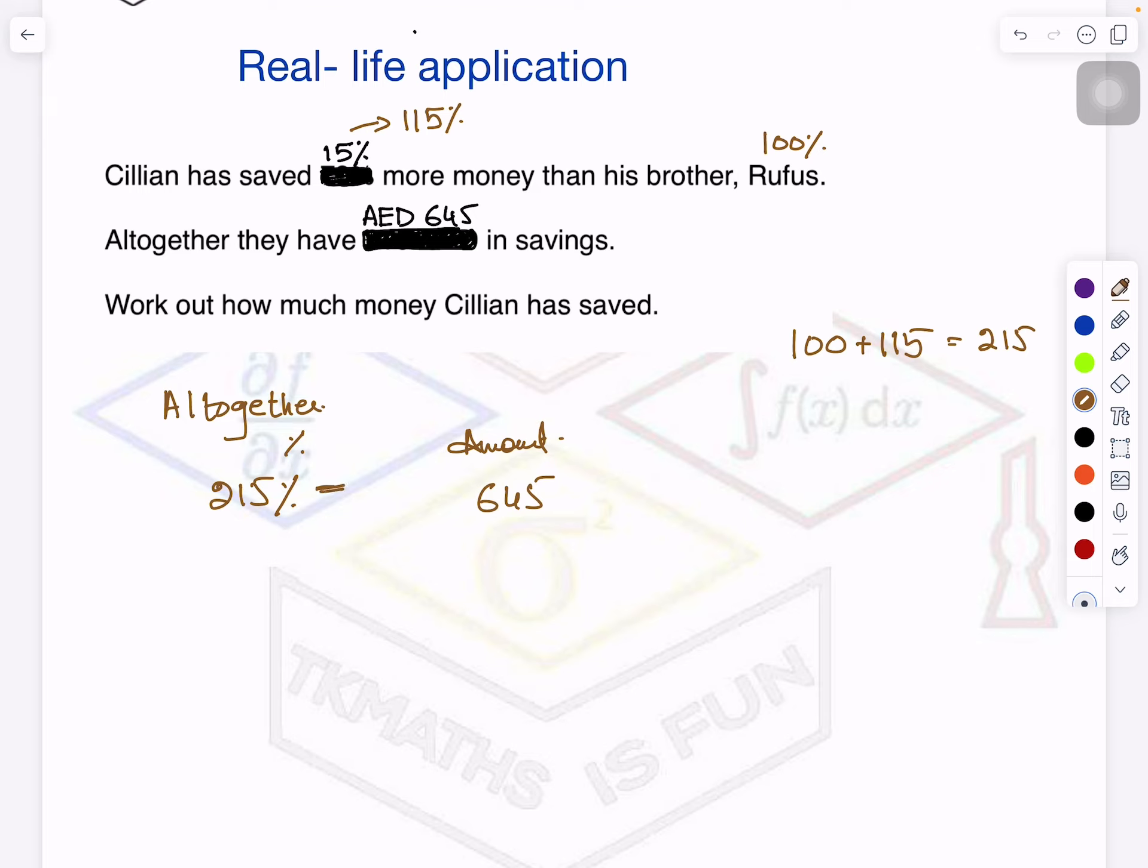Which is equal to 645 dirhams. So if I can find out Rufus's money - I have to find out whose money? Cillian's money. So what will I write here? 115 equals what? If I have to find out Rufus's money, then instead of this I will write 100. Even if I write here 100, I can easily find out Cillian's money. You know why? Once I know Rufus's money, I can simply minus it from 645.